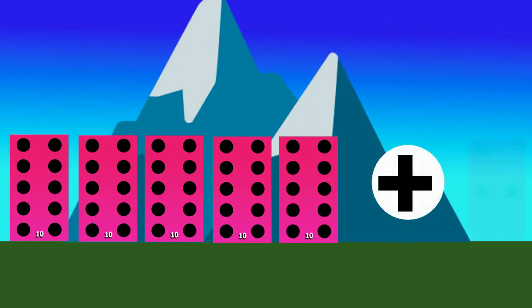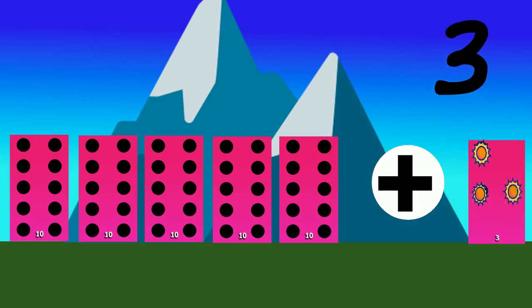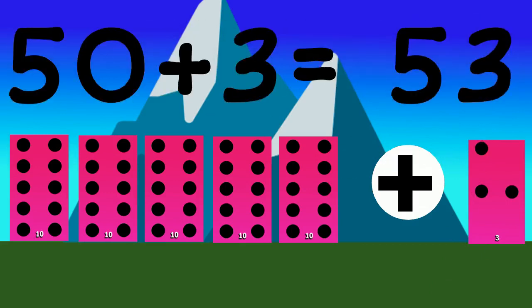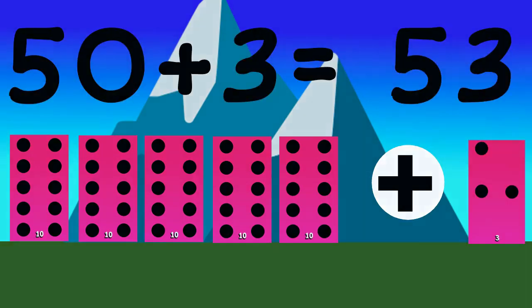Now let's add a few more dots to the next column. This time the column only has three dots, so we will need to add three to the fifty dots we had before. Now we have fifty-three dots.